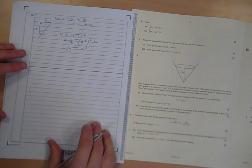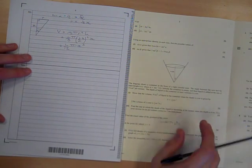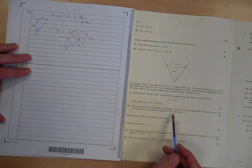As required. Good stuff. Find the rate at which the depth is increasing at the instant when the depth is 8. Give your answer in centimeters per minute correct to two decimal places.